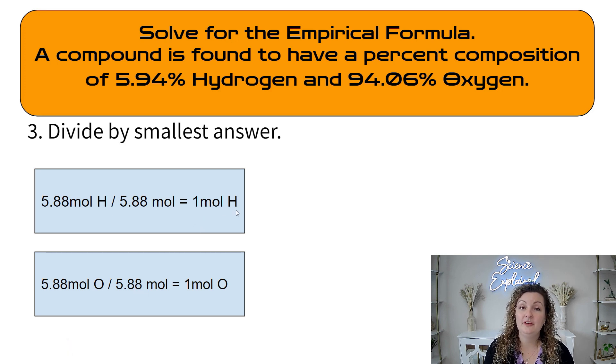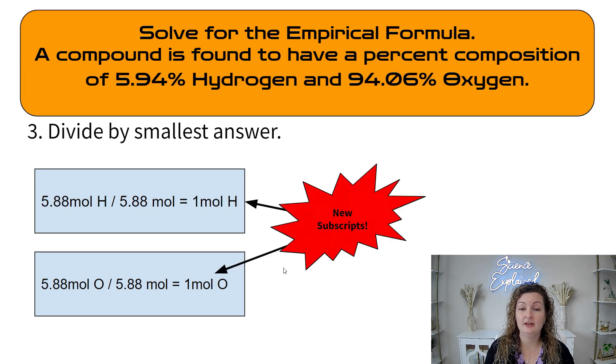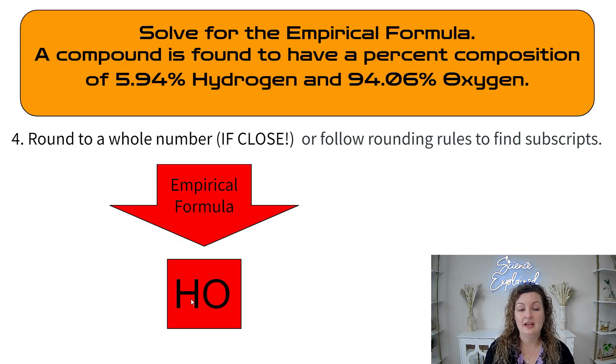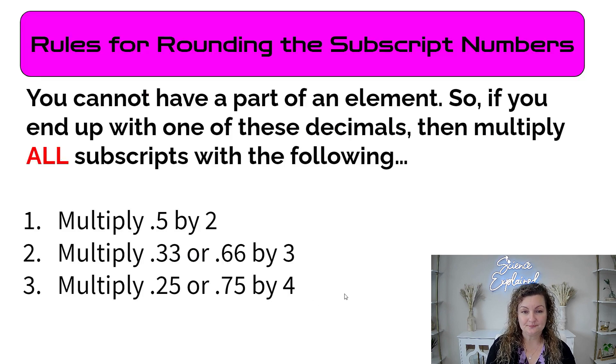So it's going to look like this. I wrote them both out and we're dividing by 5.88 since they're the same in this case. And we're going to get one mole of hydrogen and one mole of oxygen. So I don't need to use any rounding rules, which I'll remind you about in a second, because they come out to whole numbers. So when I write my empirical formula, I'm just writing that I have one mole of hydrogen and one mole of oxygen. In other words, HO, I don't have to write the ones, they're just understood.